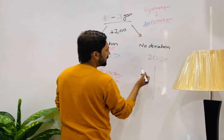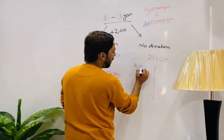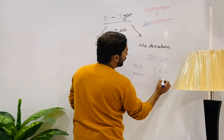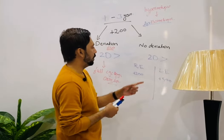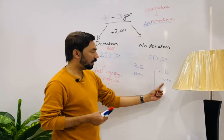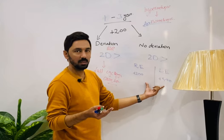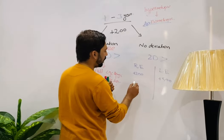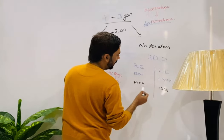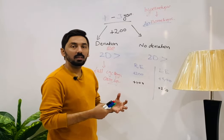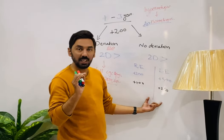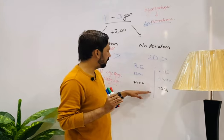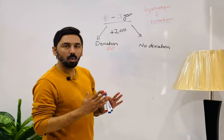For example, patient is hyperope: right eye plus two, left eye plus five — anisometropia of about three diopters. No deviation present. We prescribe partial correction: right eye plus two becomes plus one, left eye plus five becomes plus two point five. We do this to avoid manipulating or changing the normal physiological emmetropization process.